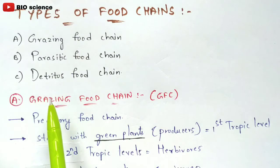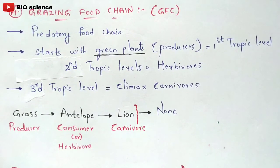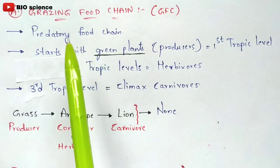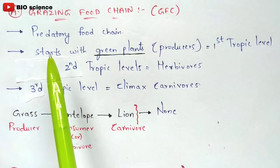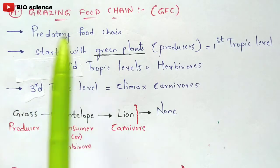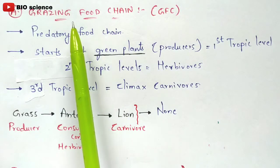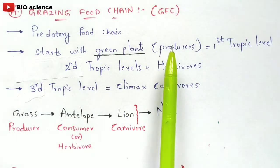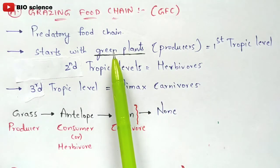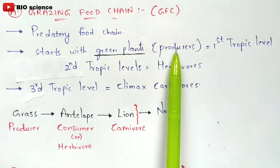The first type is the grazing food chain, shortly called GFC, also known as predatory food chain. Each and every type of food chain starts with producers and ends with carnivores — this is very important to remember. In the case of the grazing food chain, it starts with producers which are green plants. So the grazing food chain starts with green plants as the first trophic level.